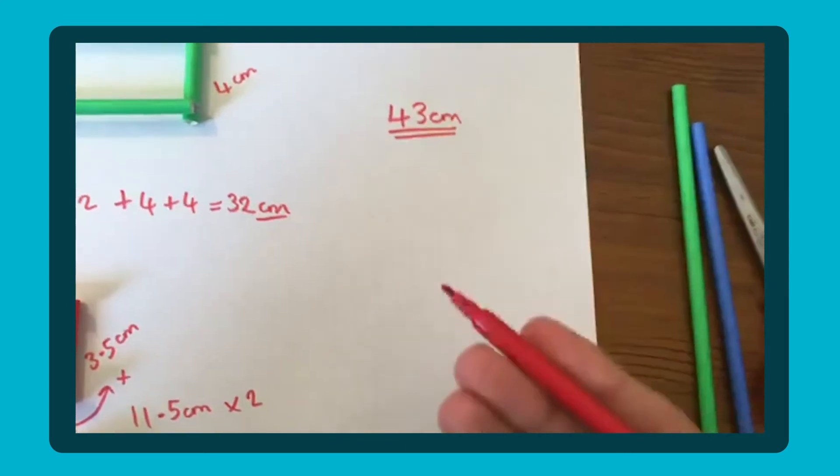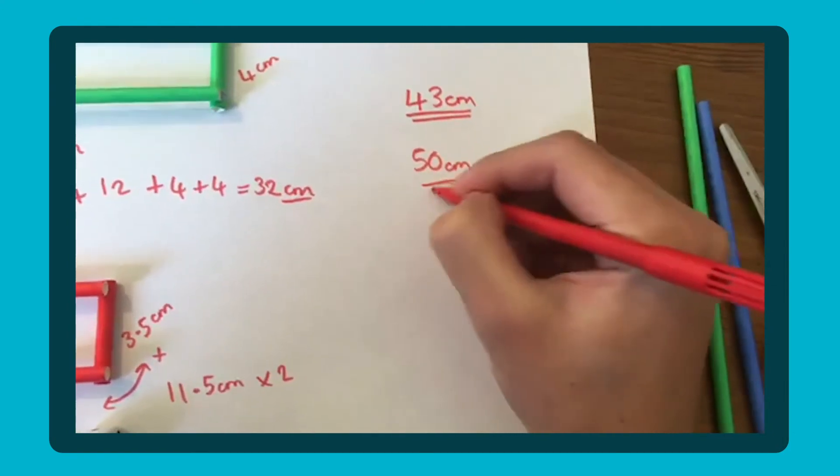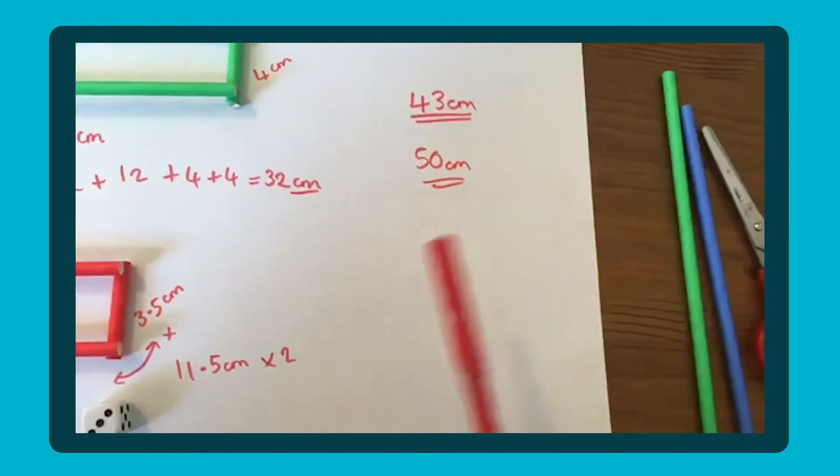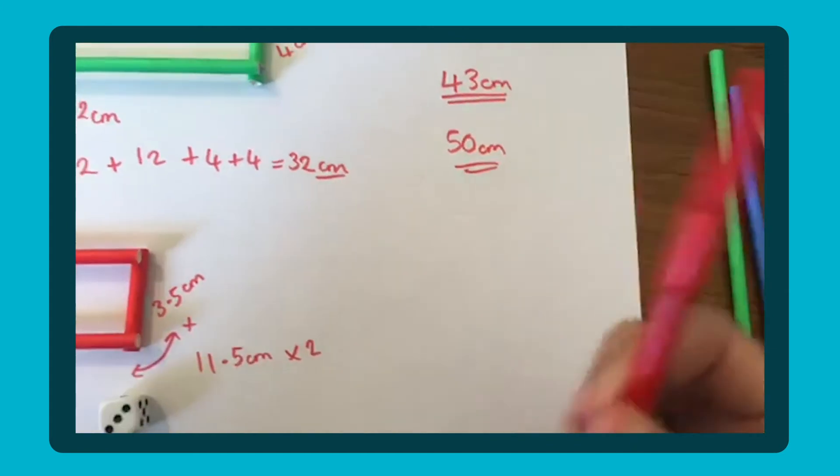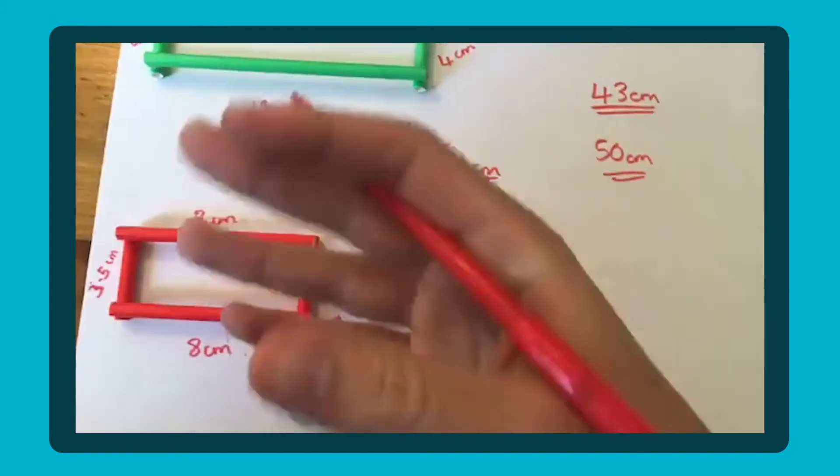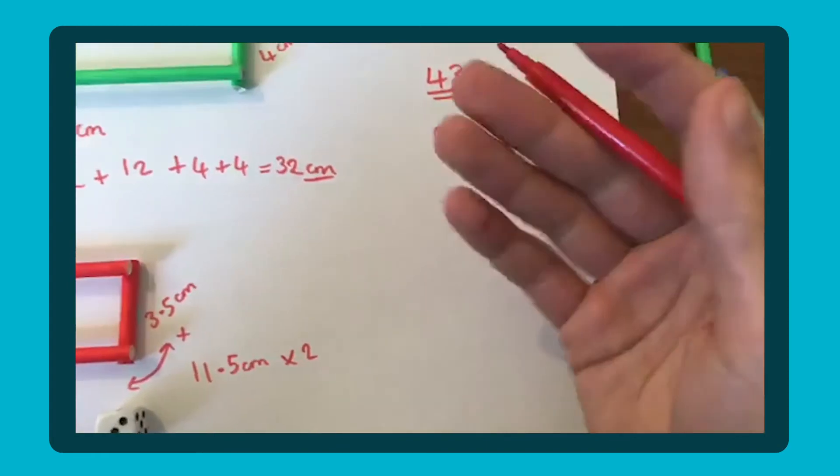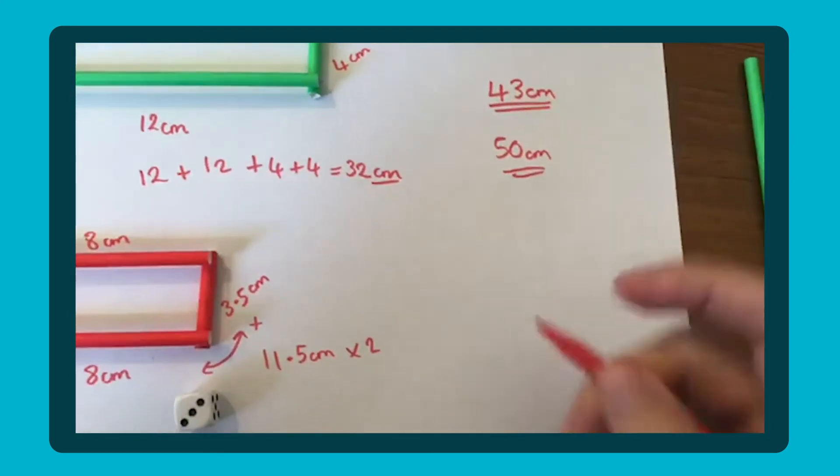And then you could ask your child to go away and draw a shape, whether it's 43, whether it's 50, whatever it may be that you've rolled or turned over the digit cards, the child then draws a shape or they cut it out with string and straws. So they're doing the perimeter in reverse. You're giving them perimeter and then they're making the shape with that.